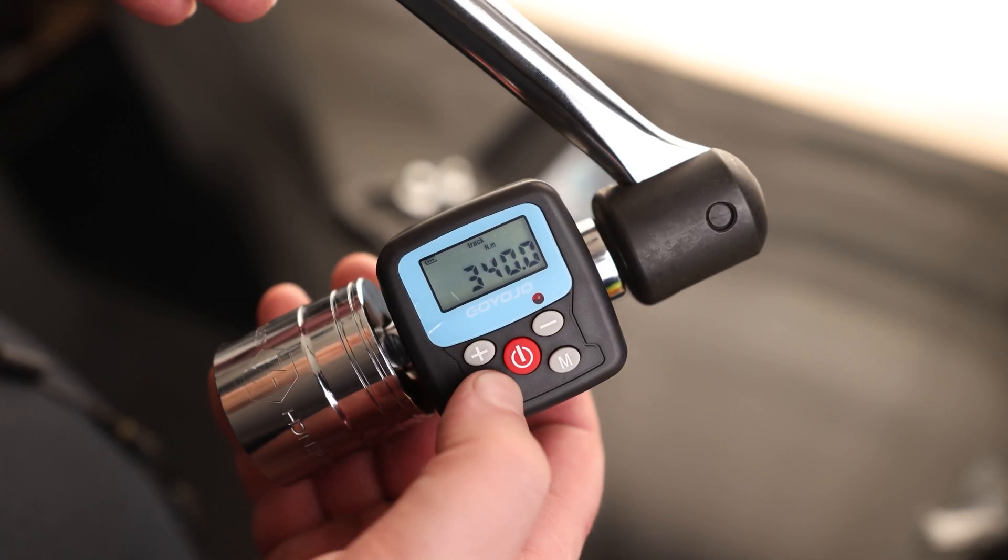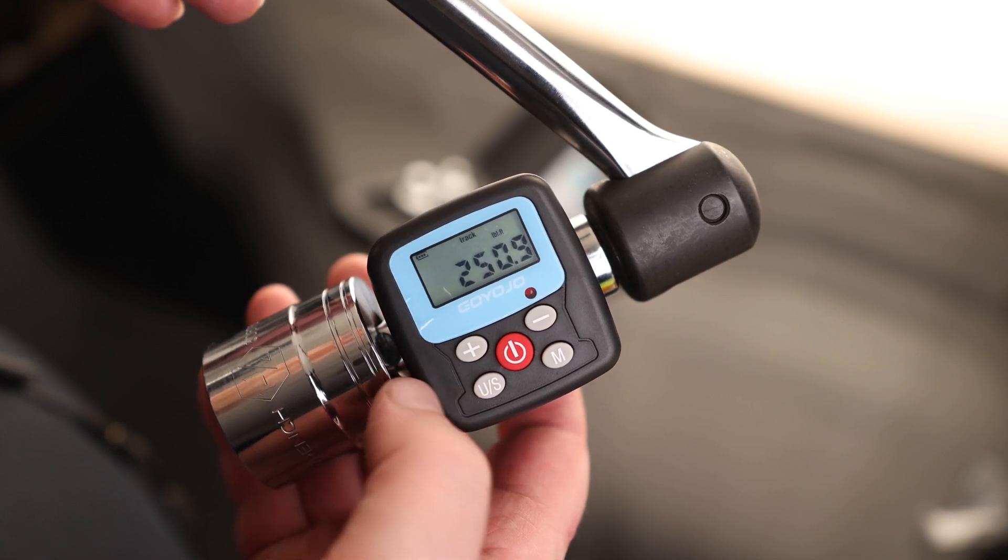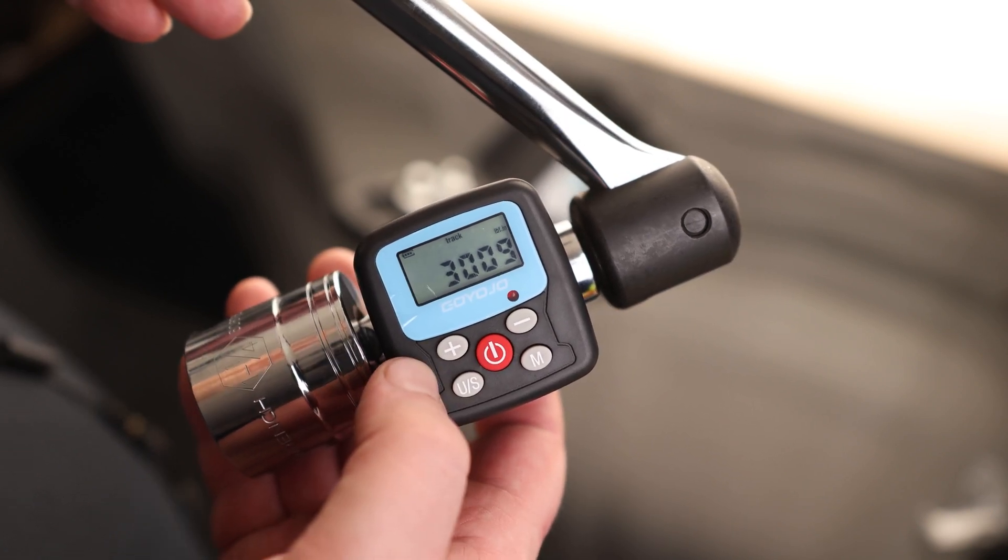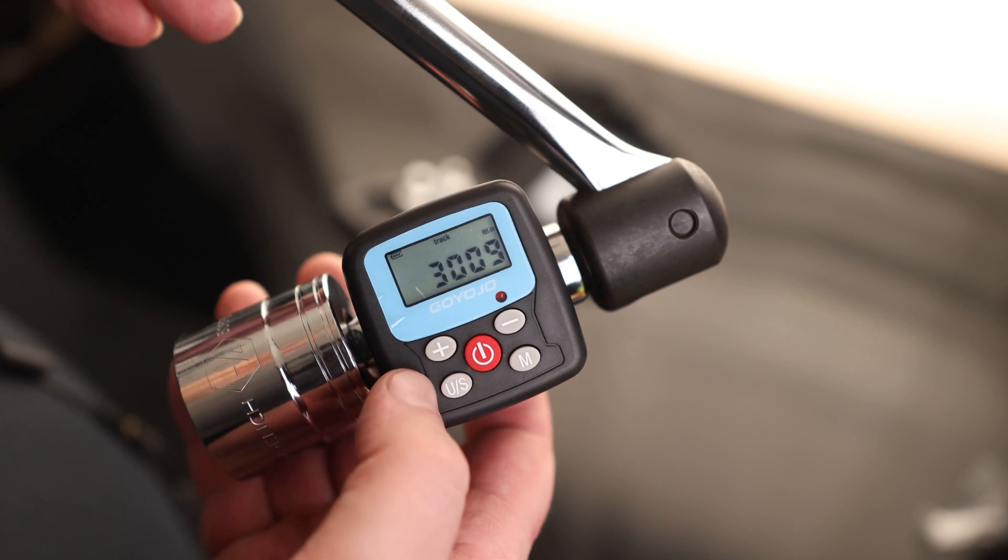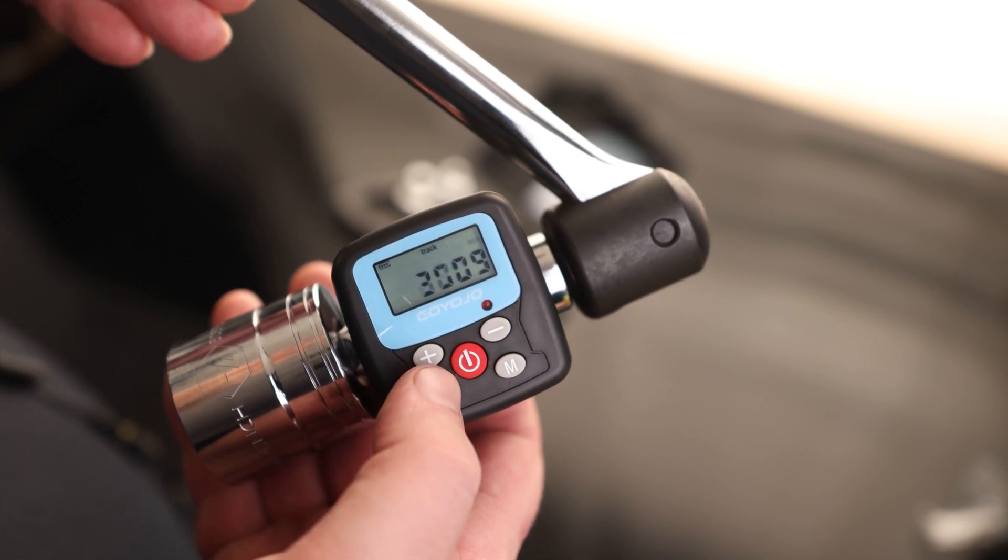By default, we're in Newton meters. We hit the units button, we can change that to foot pounds. It goes up to 250 foot pounds, which is quite a bit. And it'll actually read us in inch pounds, kilograms per centimeter, and back to Newton meters. I prefer foot pounds.